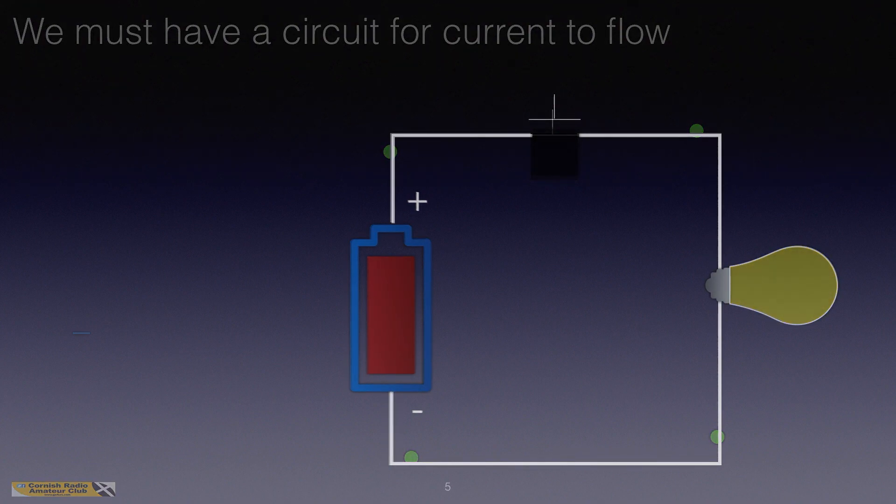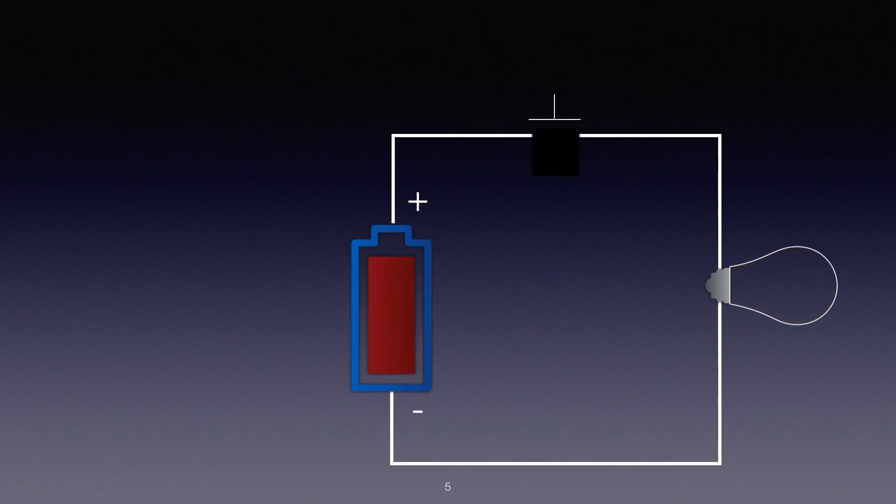If we take that circuit and replace the pictorial items with the symbols that we learnt in 3A, the symbols you need to remember 10 symbols for the foundation course, one of them is a cell. The cell has replaced the picture of the cell that was there before.